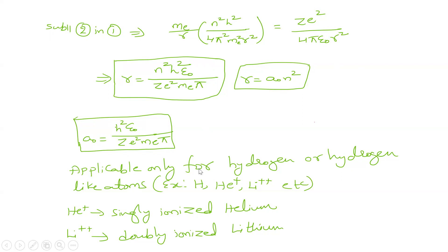Now this Bohr radius is applicable for hydrogen or hydrogen-like atoms. That can be hydrogen or helium plus - this is singly ionized helium with two protons and one electron. Similarly, doubly ionized lithium has one electron and three protons, and so on.